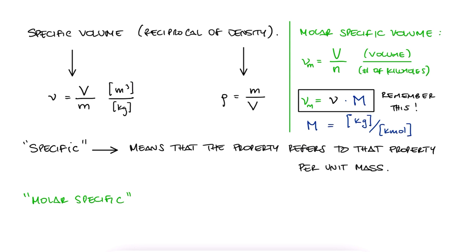Basically, when we use the word specific alone, we're referring to the mass specific property, whatever that property is. And when we explicitly say molar specific, we're referring to the molar specific property, meaning per mole or kilomole.